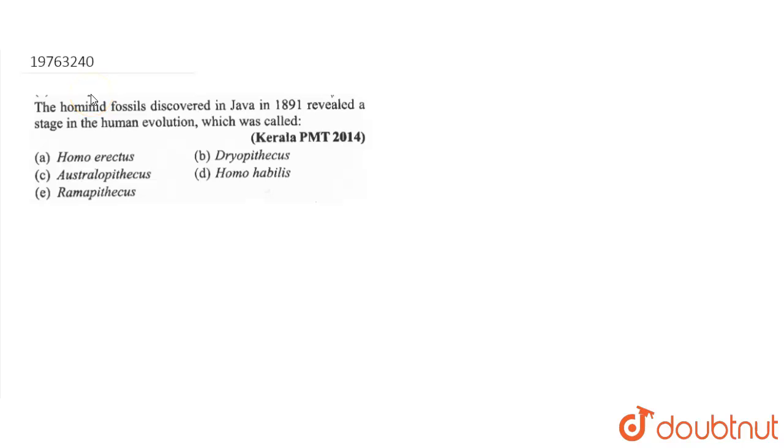So, our question is: The hominid fossils discovered in Java in 1891 revealed a stage in human evolution which was called. Basically, we are asking about when the fossil was discovered in 1891 that revealed a stage in human evolution.